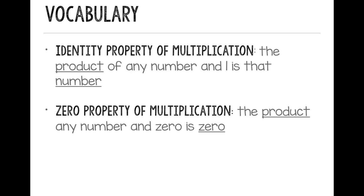And our other property is the zero property of multiplication. And this says that the product of any number and 0 is 0.